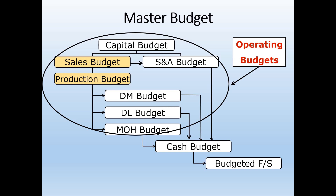Based on the production budget, the firm will determine its materials budget, labor budget, and overhead budget so that it will be able to produce all of the units needed. The sales budget also controls the selling and administrative budget — how much the firm plans to cover its selling and administrative costs to support the number of units it believes it will sell. The capital budget relates to acquiring or getting rid of long-term assets like machinery, delivery trucks, and factories.